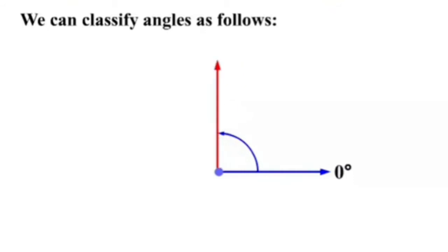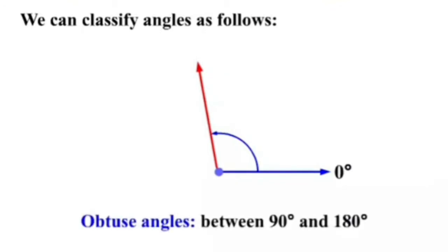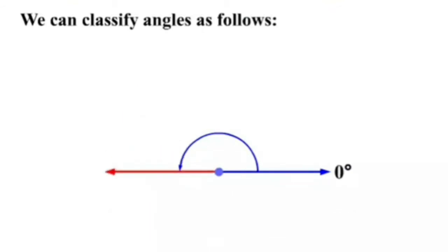An angle whose measure is exactly 90 degrees is called a right angle. This will be denoted by a square. An angle between 90 degrees and 180 degrees is called an obtuse angle. An angle whose measure is exactly 180 degrees is called a straight angle.